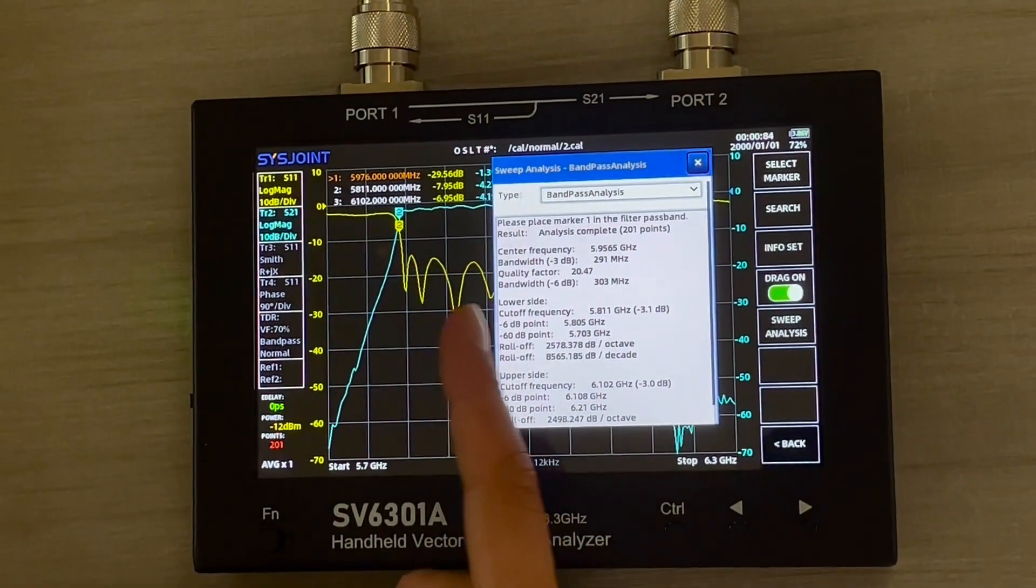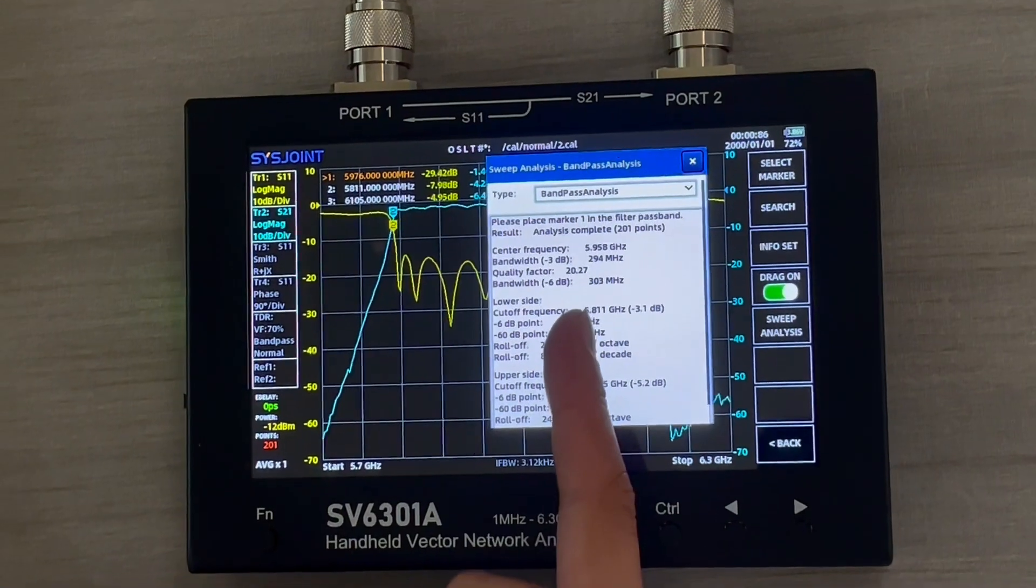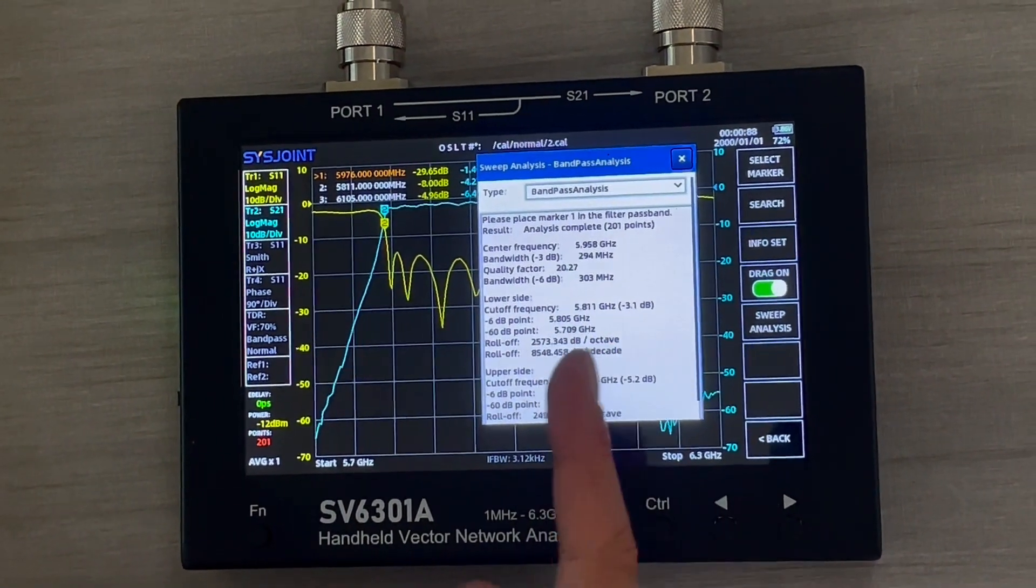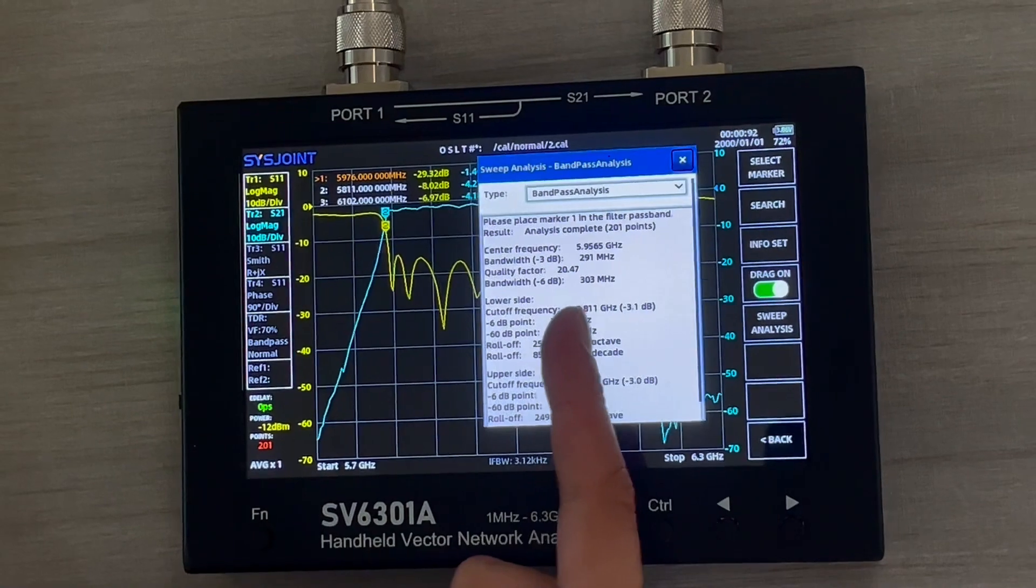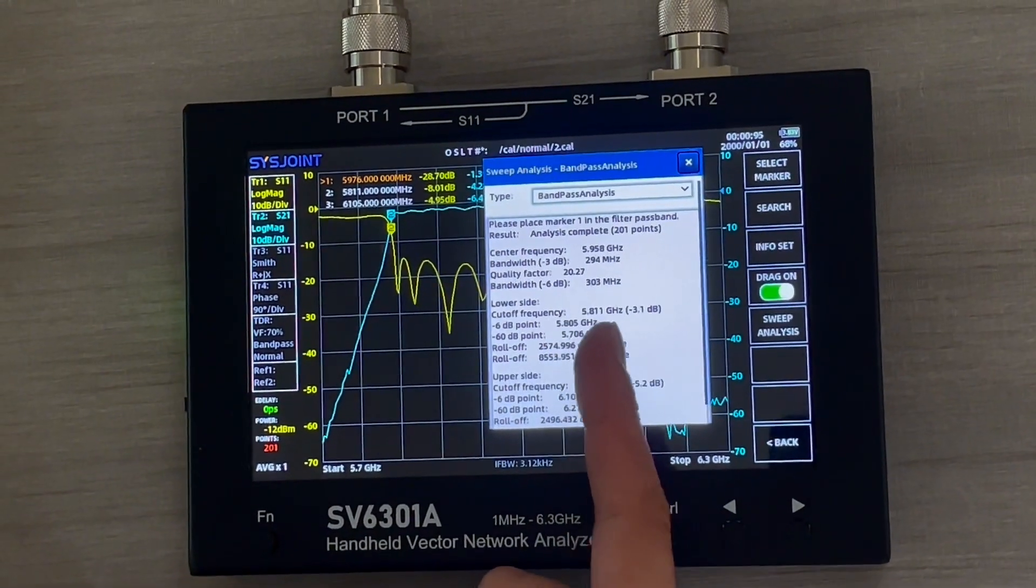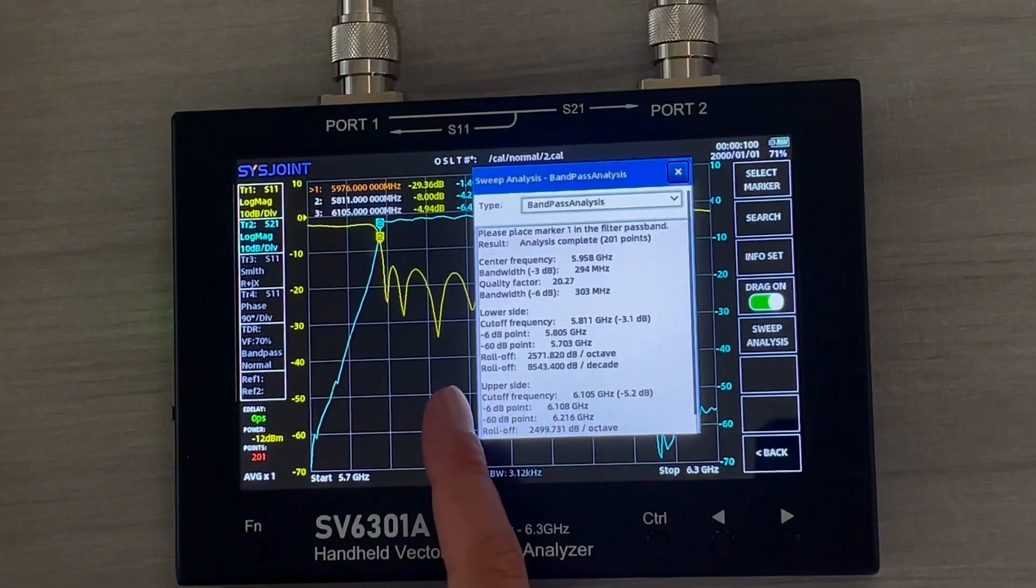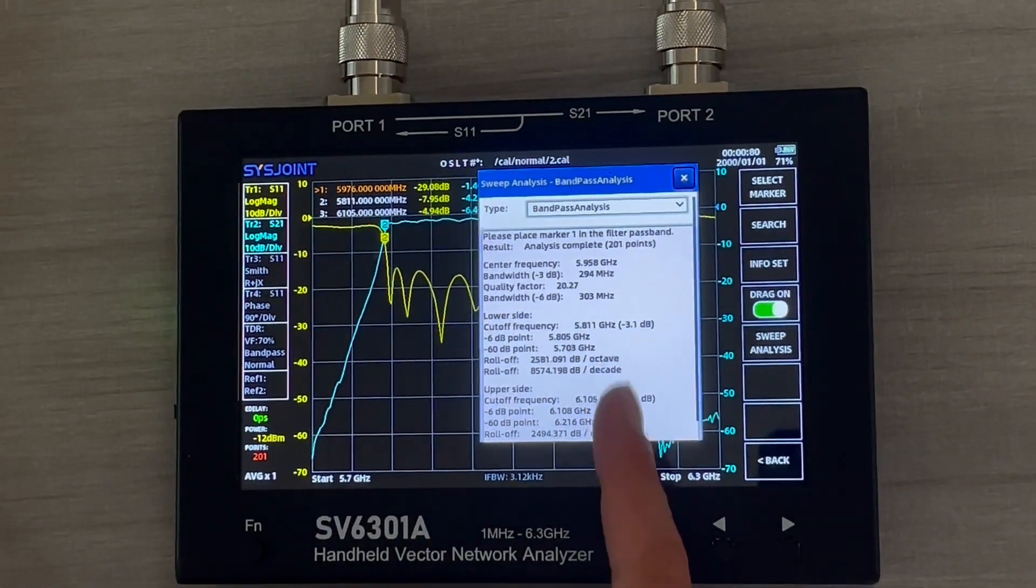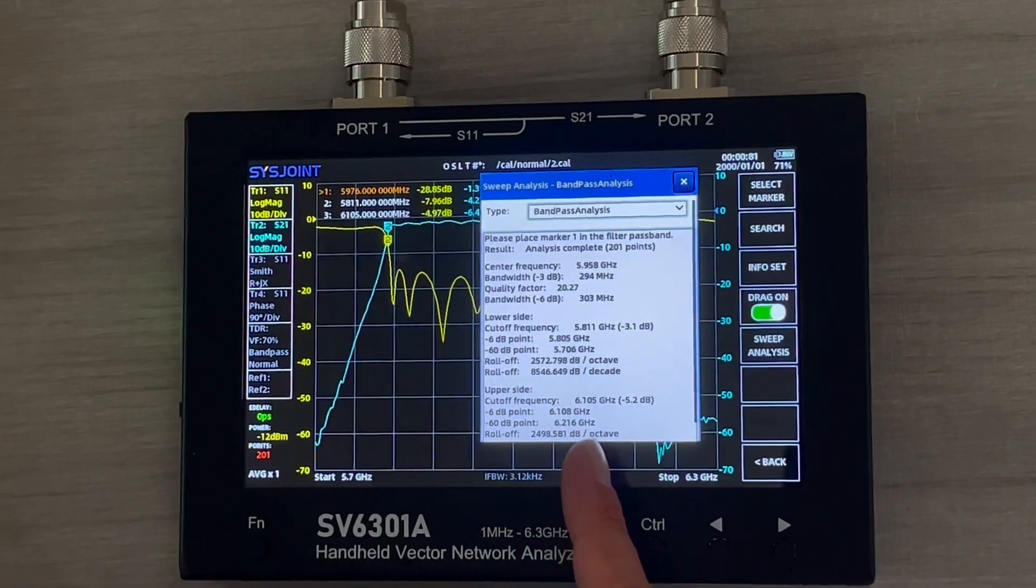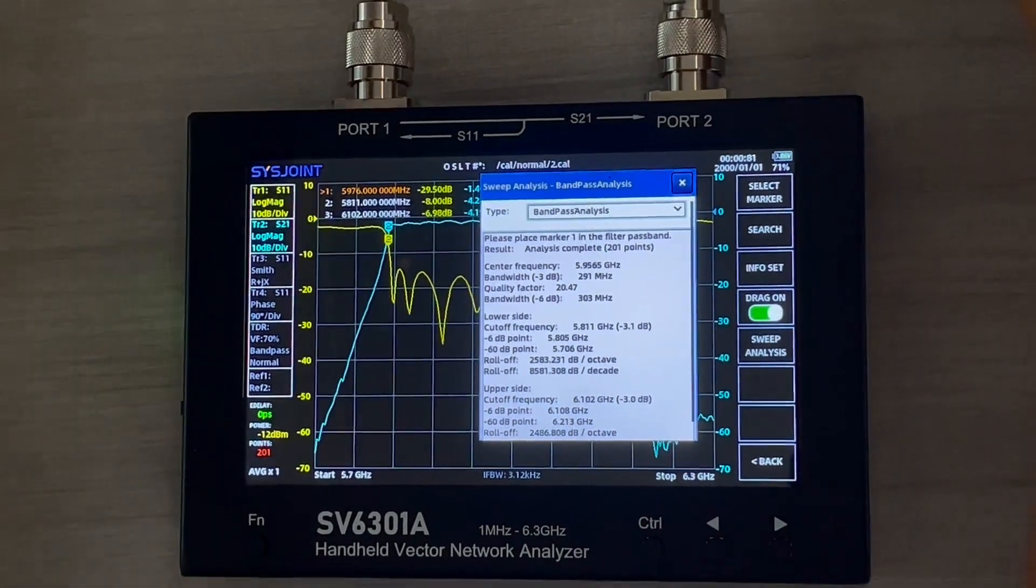It tells us the center frequency is 5.958 gigahertz, something around that. The bandwidth will be around 294 megahertz. The cutoff frequency starts from 5.8 all the way to the upper side, which is 6.1 gigahertz. Now let's take a look.